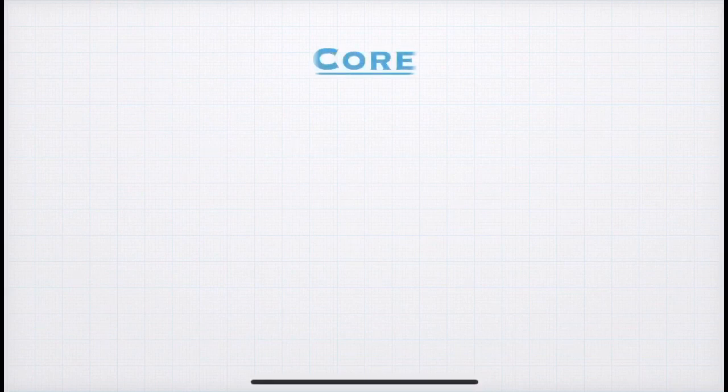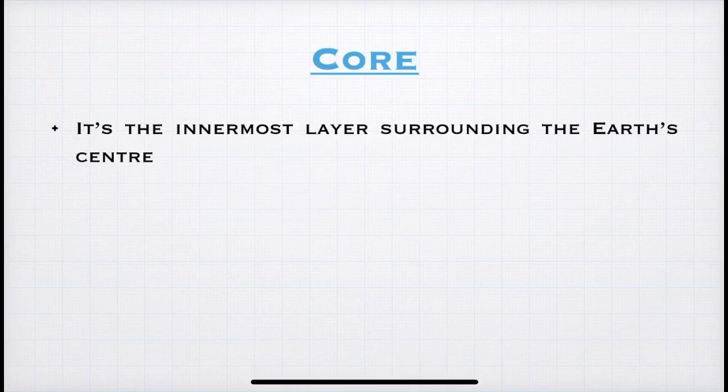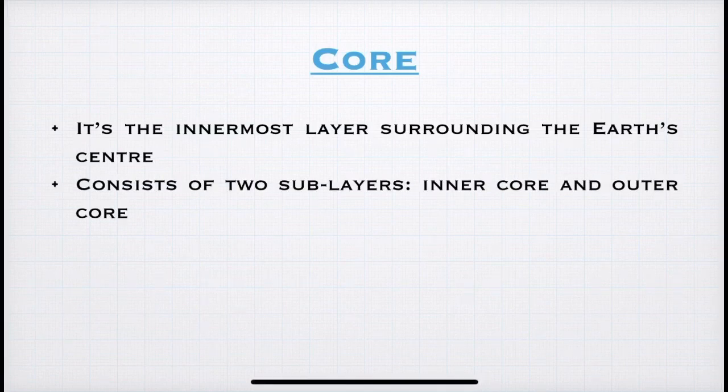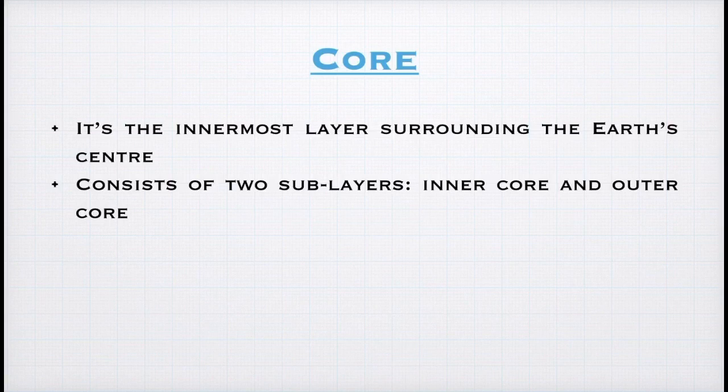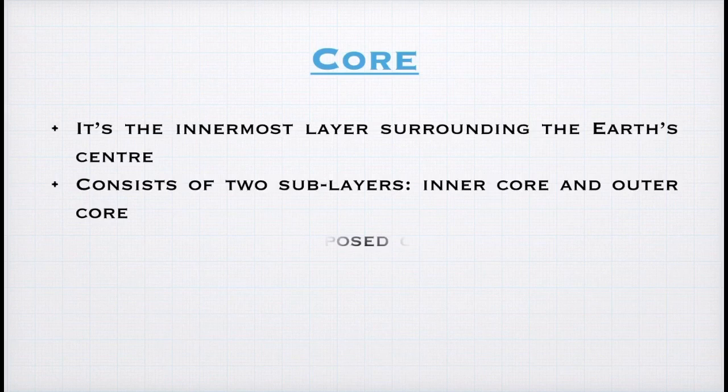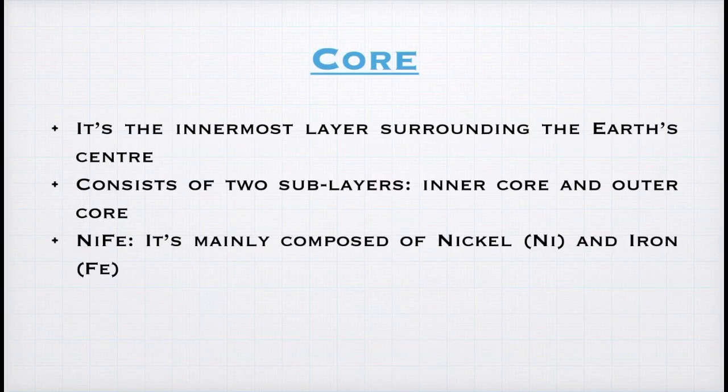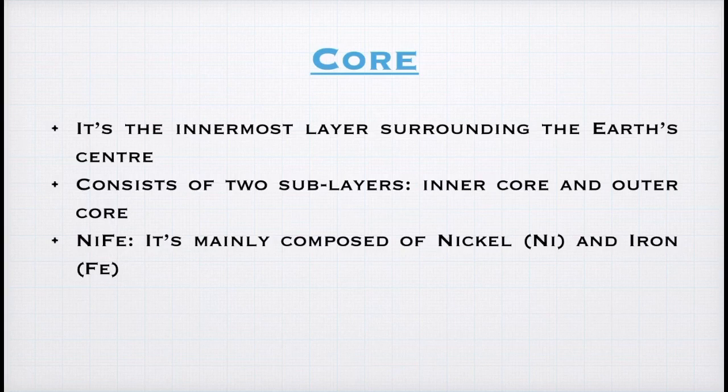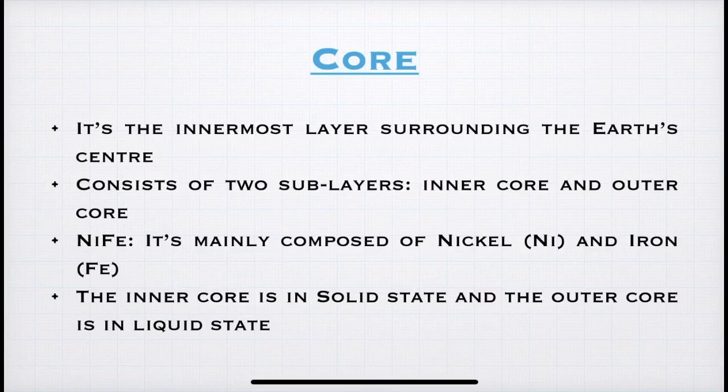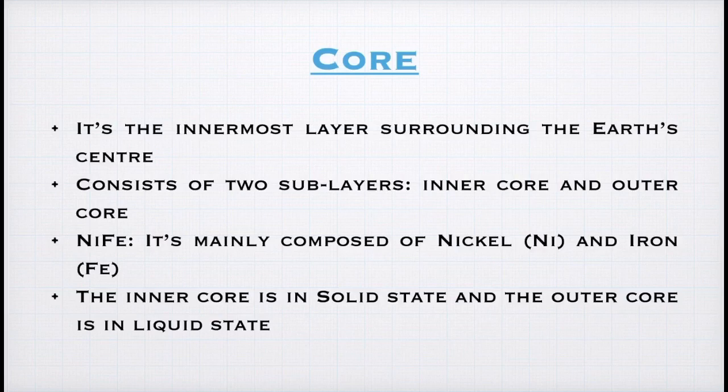Now, students, the last and the final layer that is core. So, it is the innermost layer that also surrounds the Earth's center. Also, as you saw in the diagram, it has two sublayers, the inner core and the outer core. Now, the core is mainly made up of nickel and iron. Nickel is represented as Ni and iron is represented as Fe. Hence, core is called nife. N-i-f-e. Also, a point worth noting is that inner core is present in solid state and outer core is present in liquid state. This liquid is nothing but the magma or molten rock.